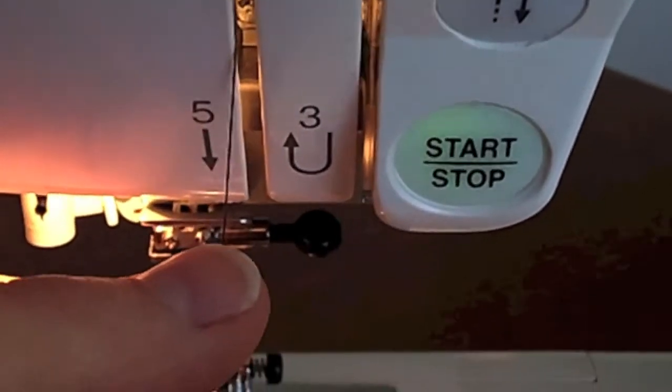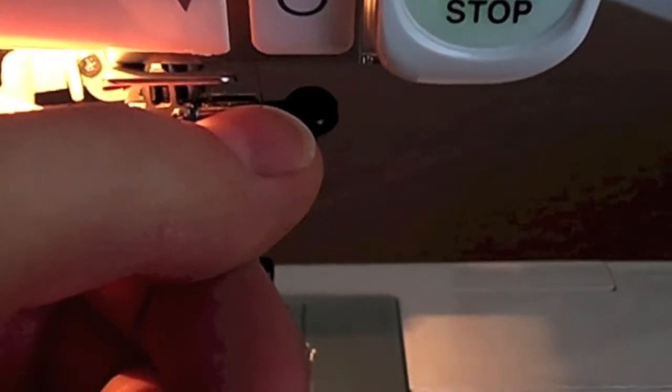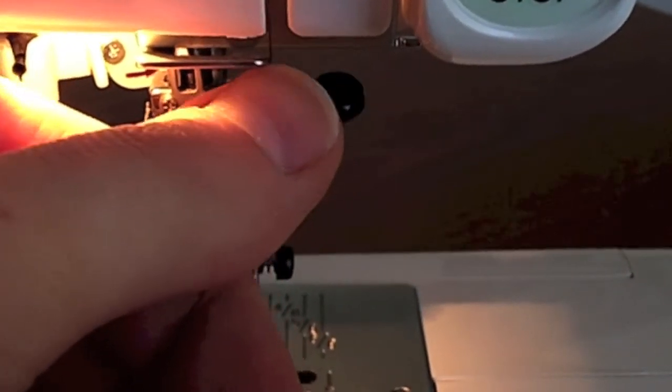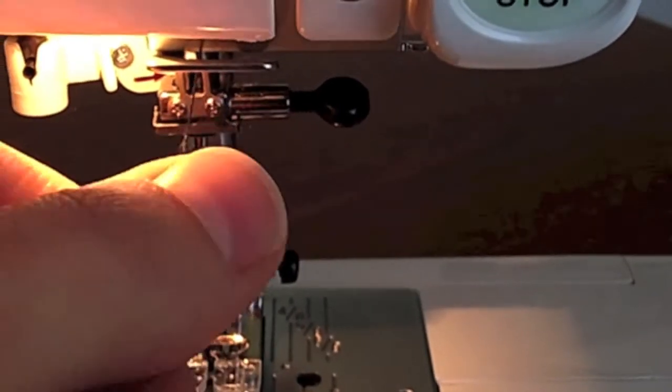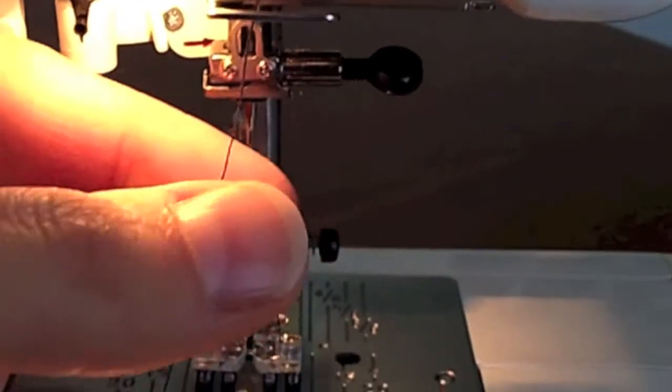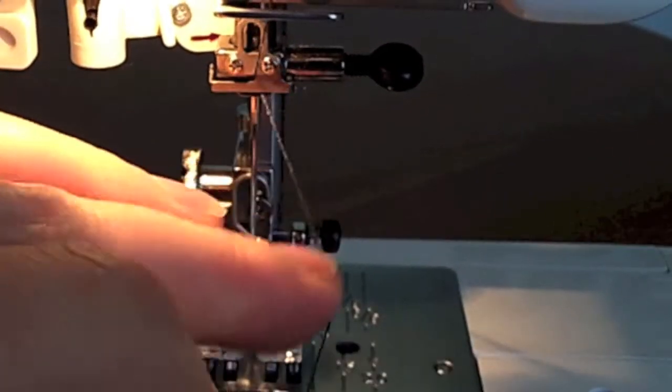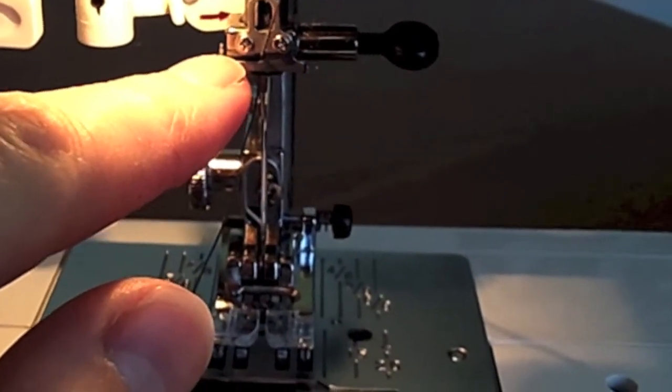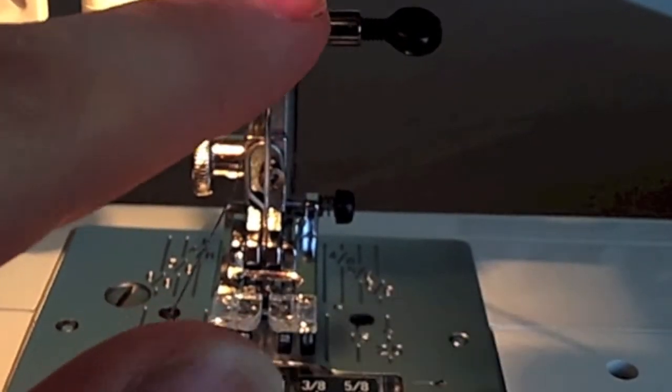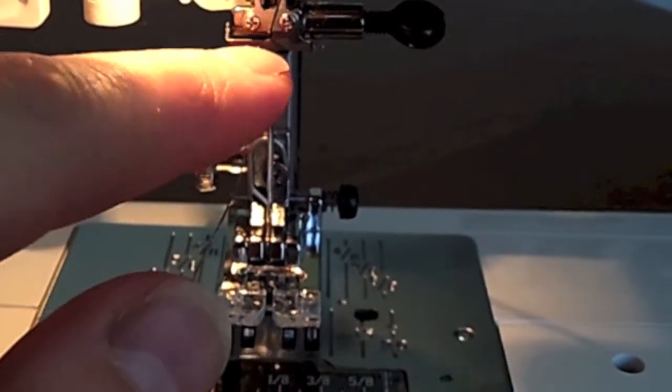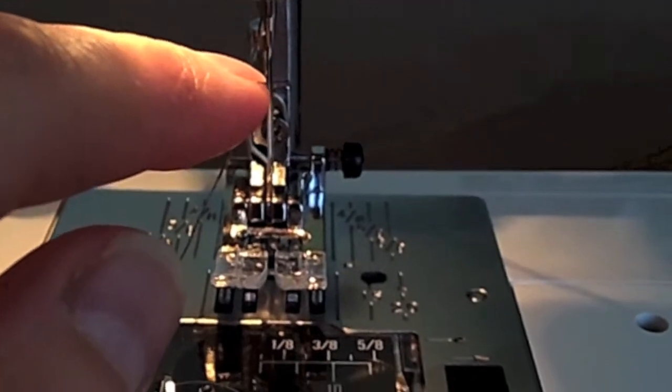I'm going to bring the thread back down. I have a thread guide here at the top, so I'm going to put my thread behind that thread guide. Then there should be another thread guide on the needle bar there. You can see that hook. You might have one thread guide, you might have two. You just might need to check your manual to see what you have on your machine.